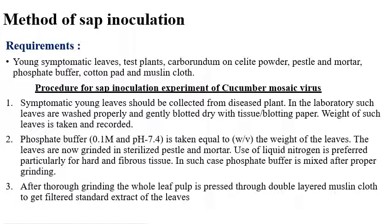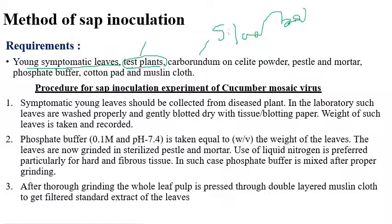The requirements for performing the sap transmission experiment in the laboratory are: symptomatic leaves collected from infected plants, test plants (healthy plants for inoculation), carborundum powder or celite powder — carborundum powder is chemically known as silicon carbide, which is very important — as well as pestle and mortar, phosphate buffer, cotton pads, and muslin cloth.